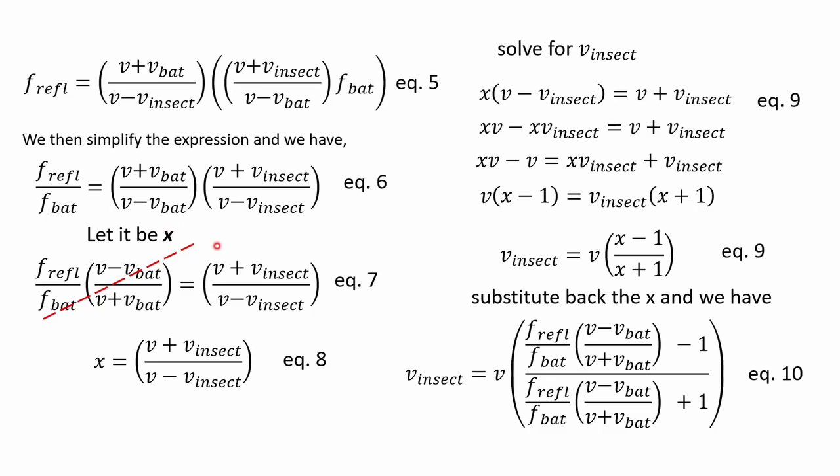On the right term, we only have the velocity of the insect, v_insect. We let this term on the left as x and write an expression shown in equation eight.